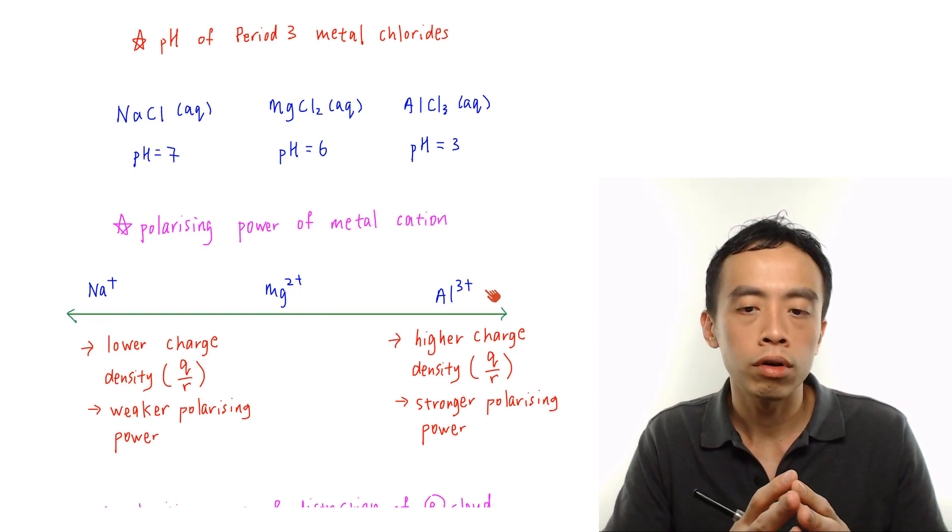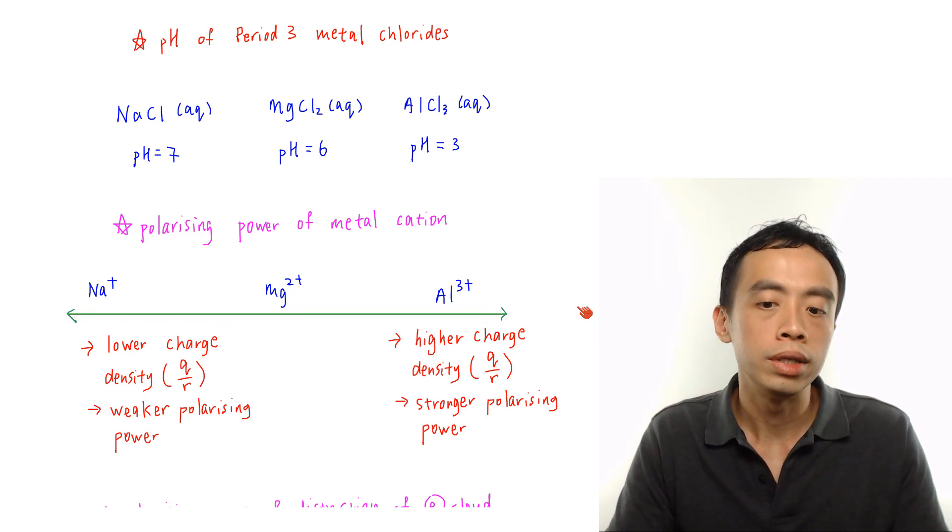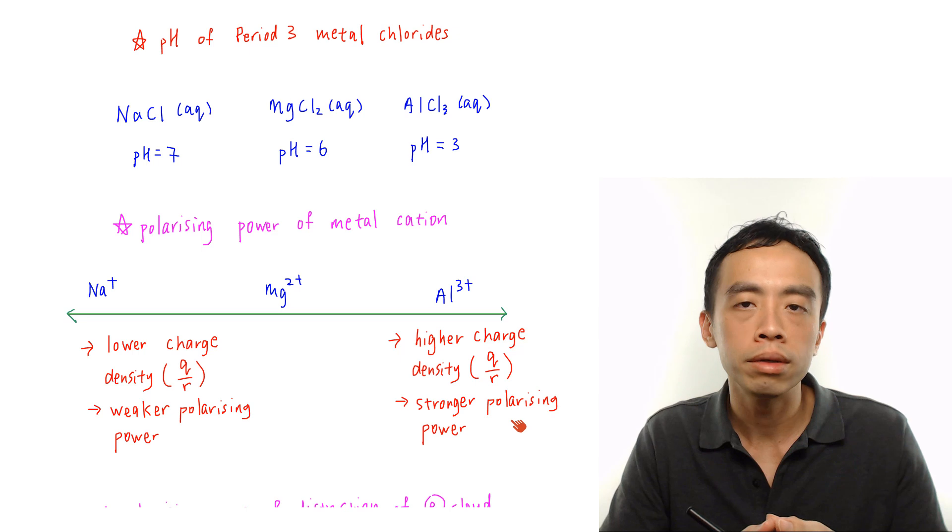Now Al3+, of course it has the highest charge in this case. The charge density for this set will be the highest. So therefore, it will have an even stronger polarizing power.